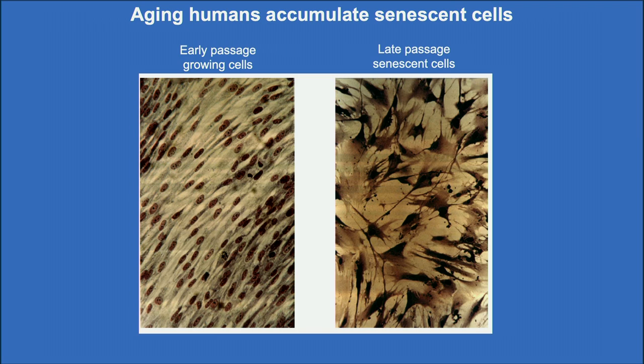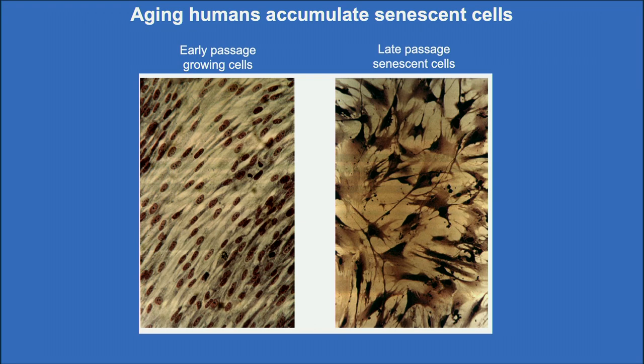On the left you can see that the cells have undergone only two or so cell divisions. They look normal with oval nuclei and plump cytoplasm. On the right are cells that have gone 60 population doublings, or divided 60 times. These cells clearly look abnormal. They have flattened cell morphology and very strange looking nuclei. These cells are what we call senescent cells, and aging humans and all other mammals accumulate these type of cells to promote cellular aging and also organismal aging as well.